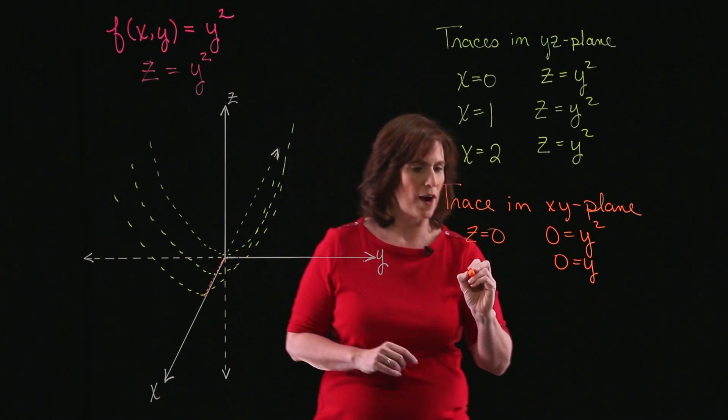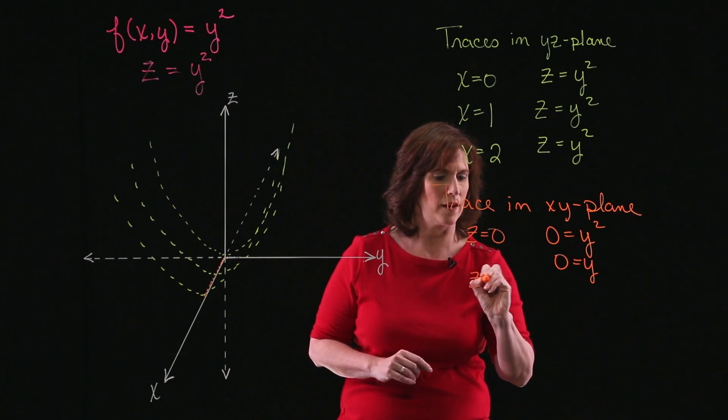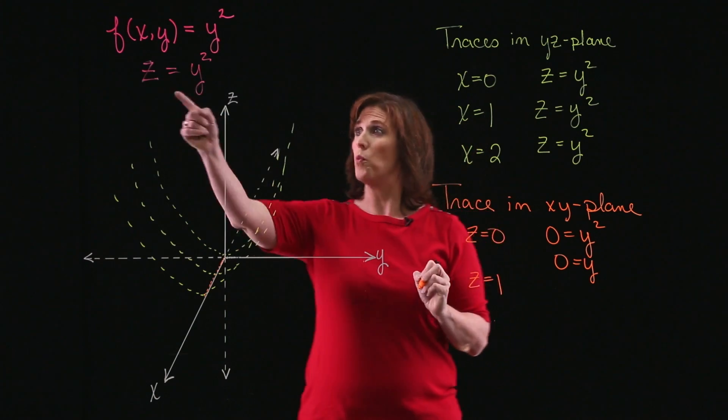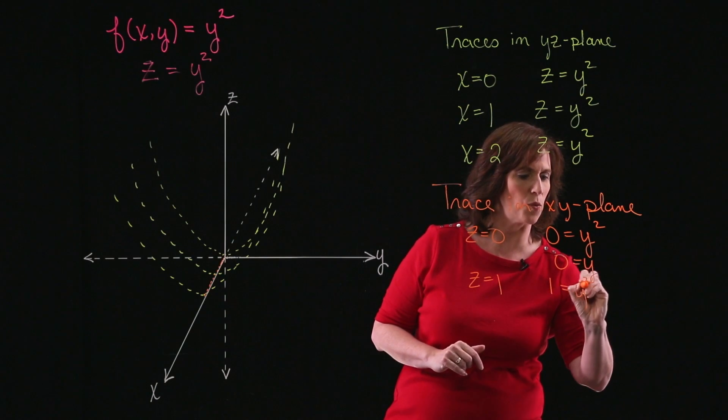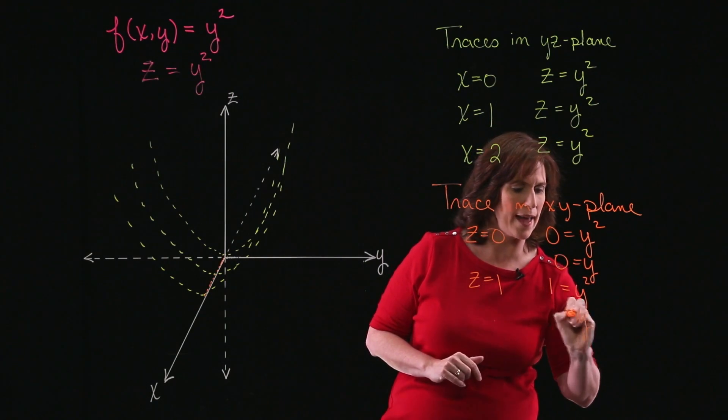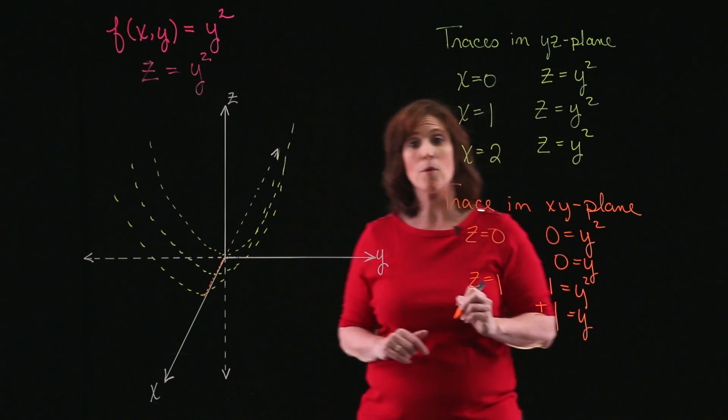Let's try one more. Let's try z equals 1. If z equals 1, I have 1 equals y squared, which means that y could be plus or minus 1.